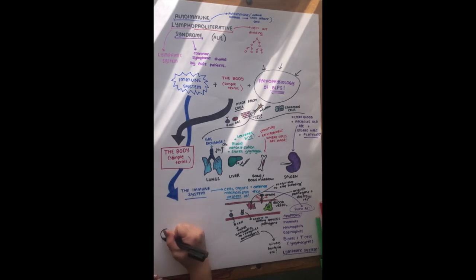So most of these, what I've written on the right of the cells, they're white blood cells, except for the platelets.